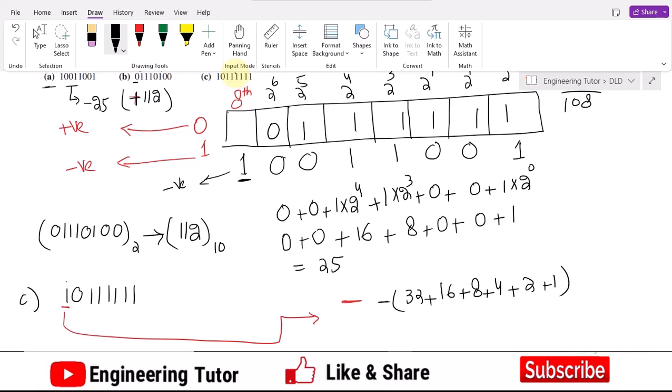is 31 and this is minus 63. So the decimal equivalent of this number is minus 63 in decimal.